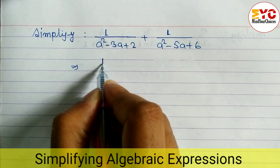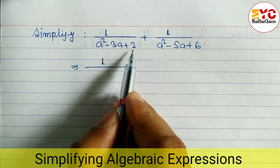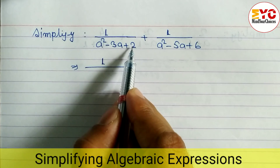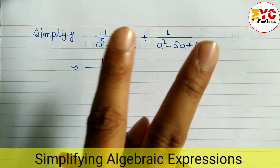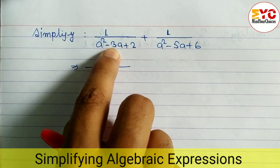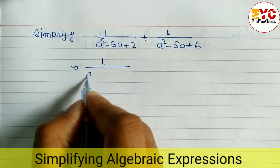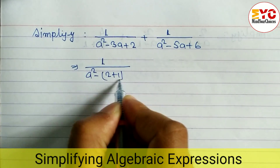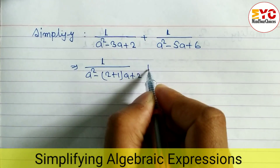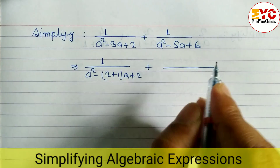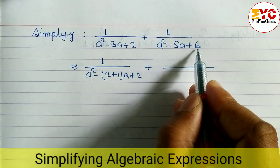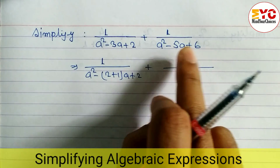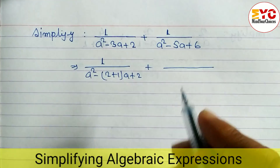Let's factorize the first expression. We need two factors whose multiplication is 2 and addition is 3 — that is 2×1=2 and 2+1=3. So a²-3a+2 becomes a²-2a-1a+2. For the second expression, we need two factors whose multiplication is 6 and addition is 5 — that is 3×2=6 and 3+2=5.